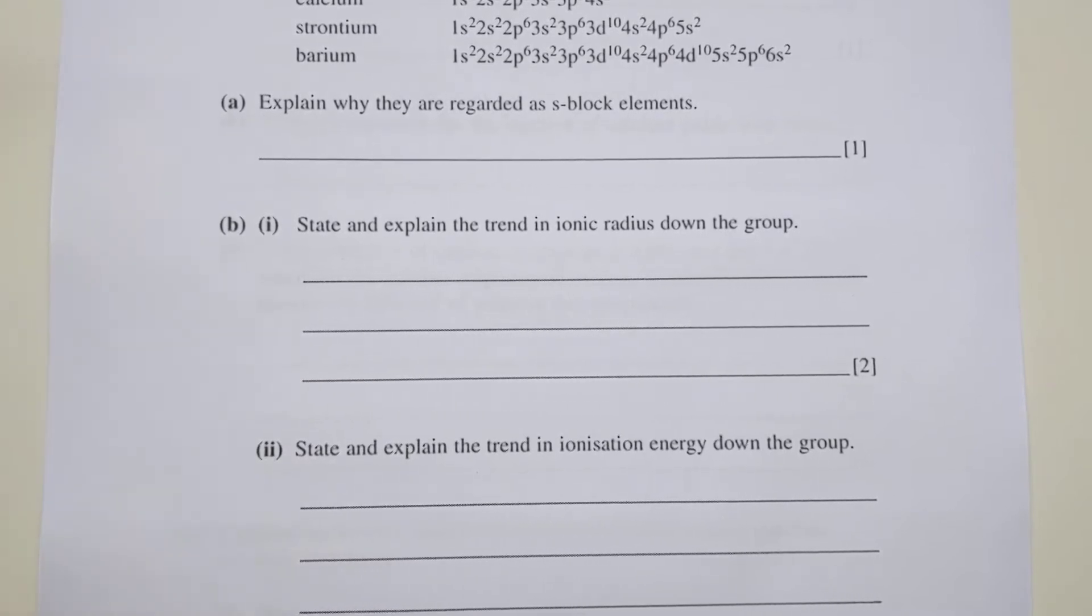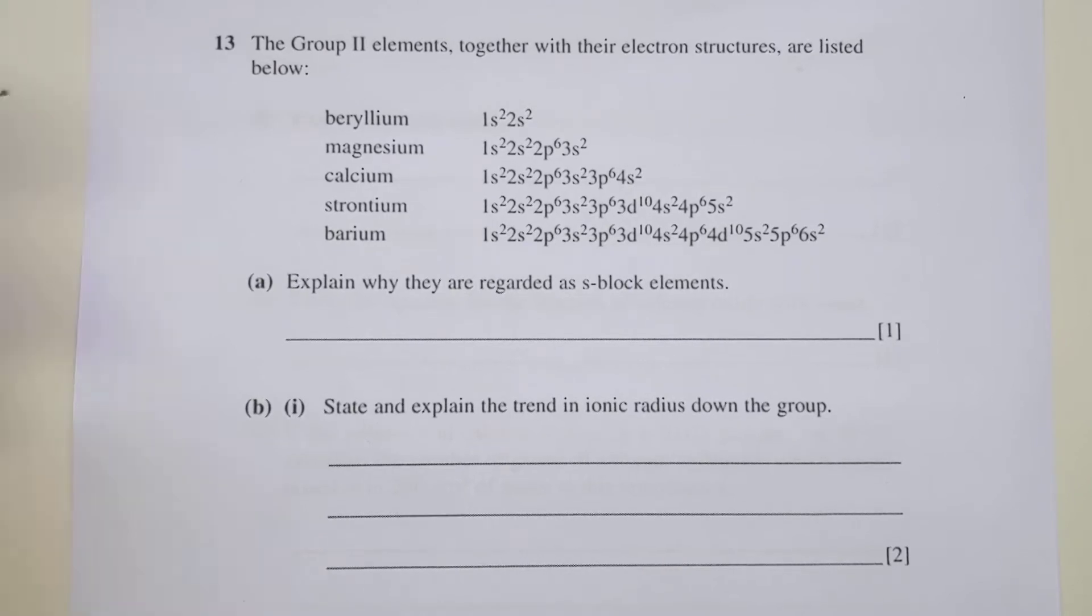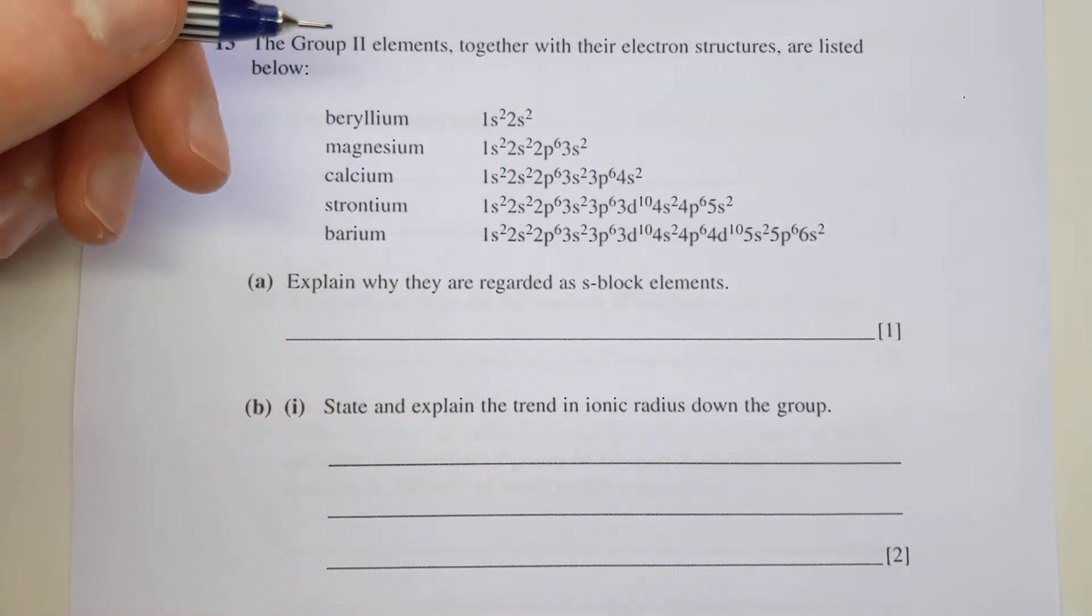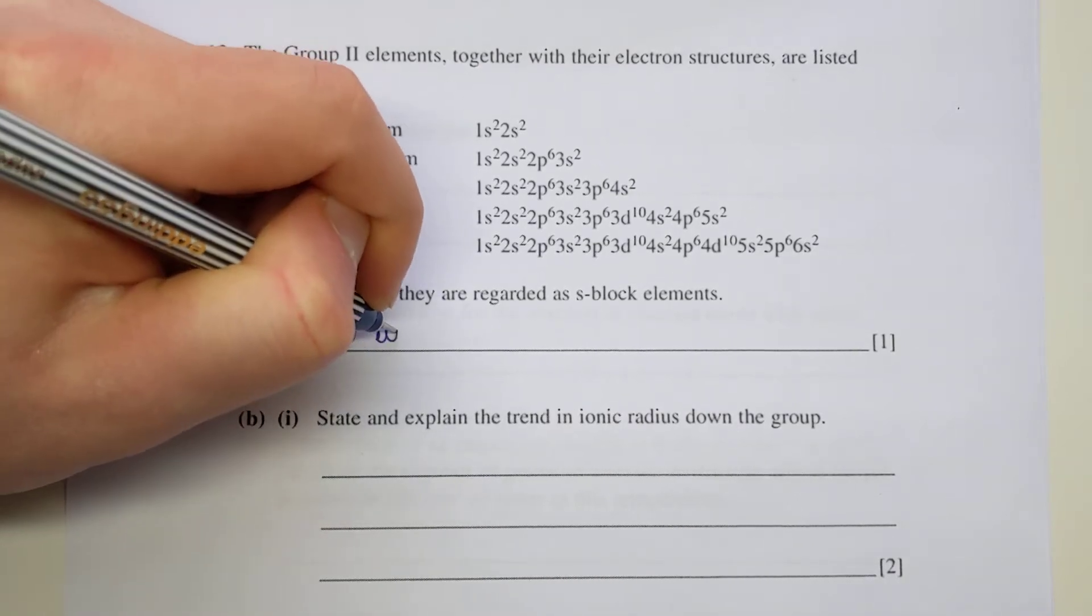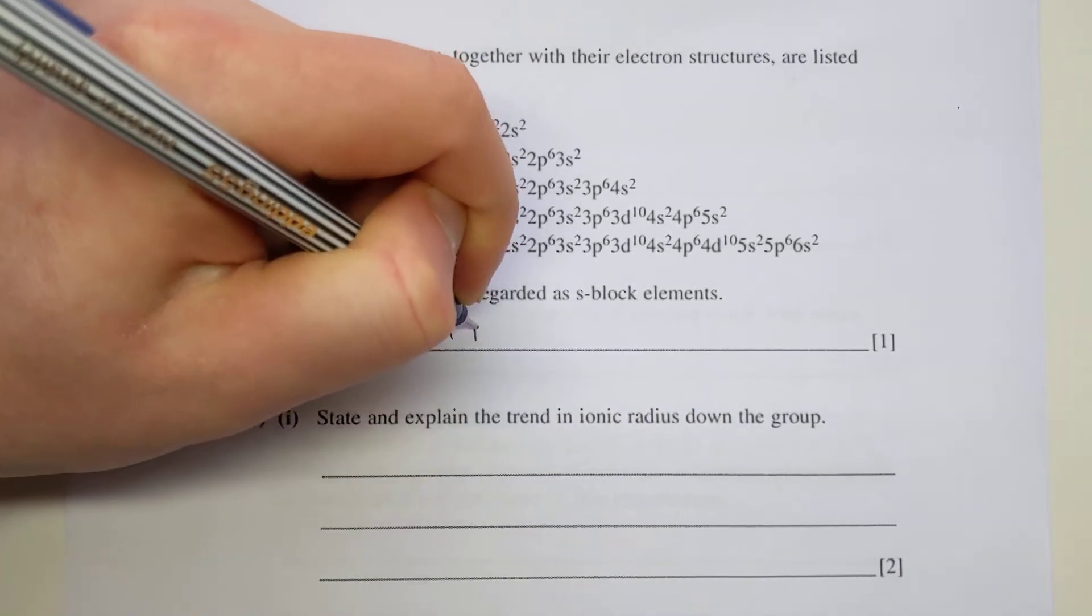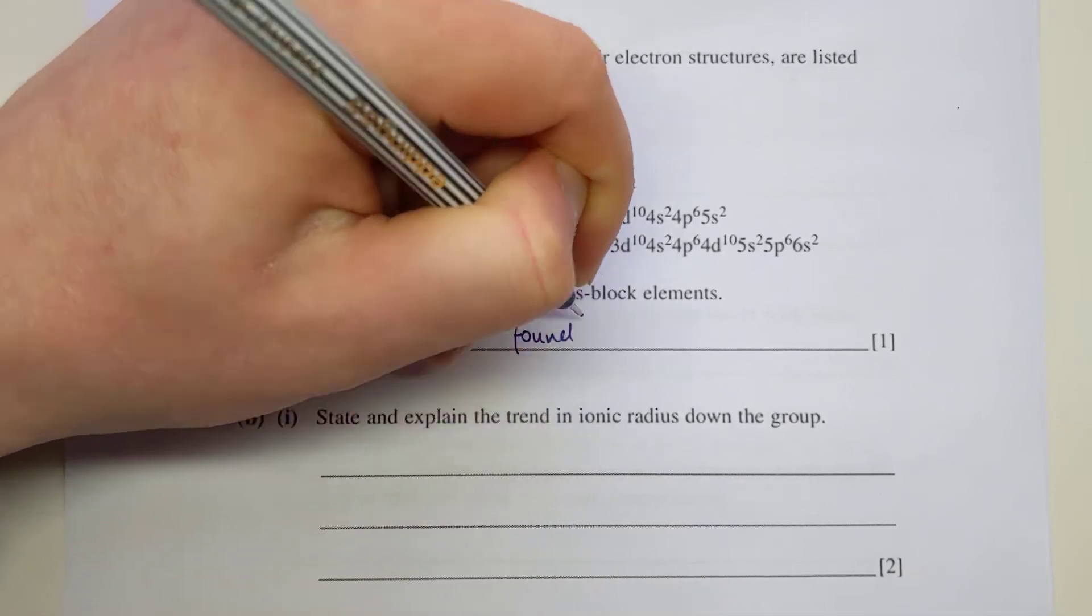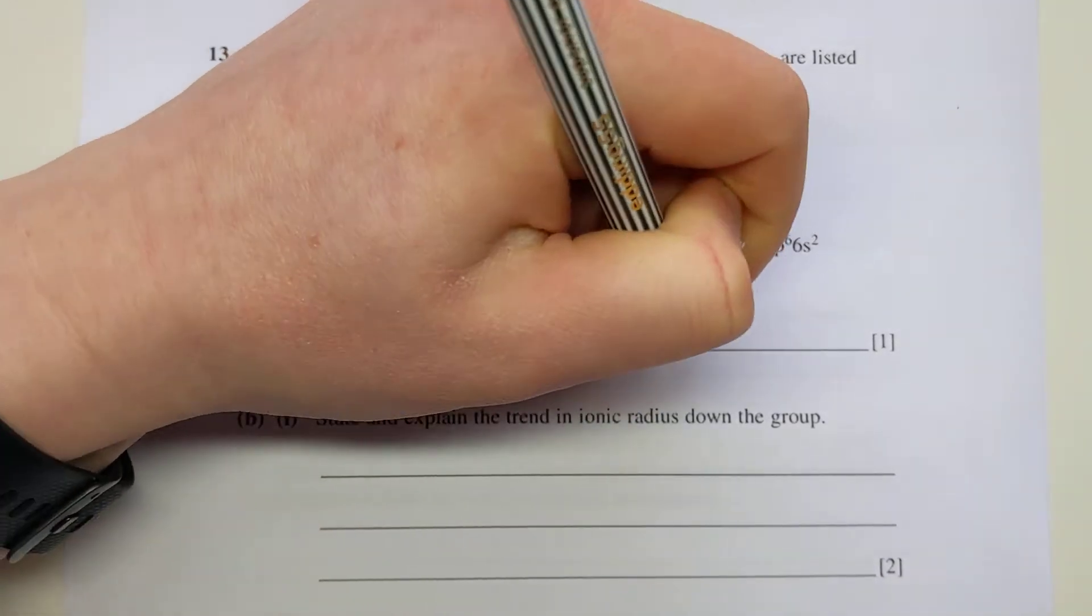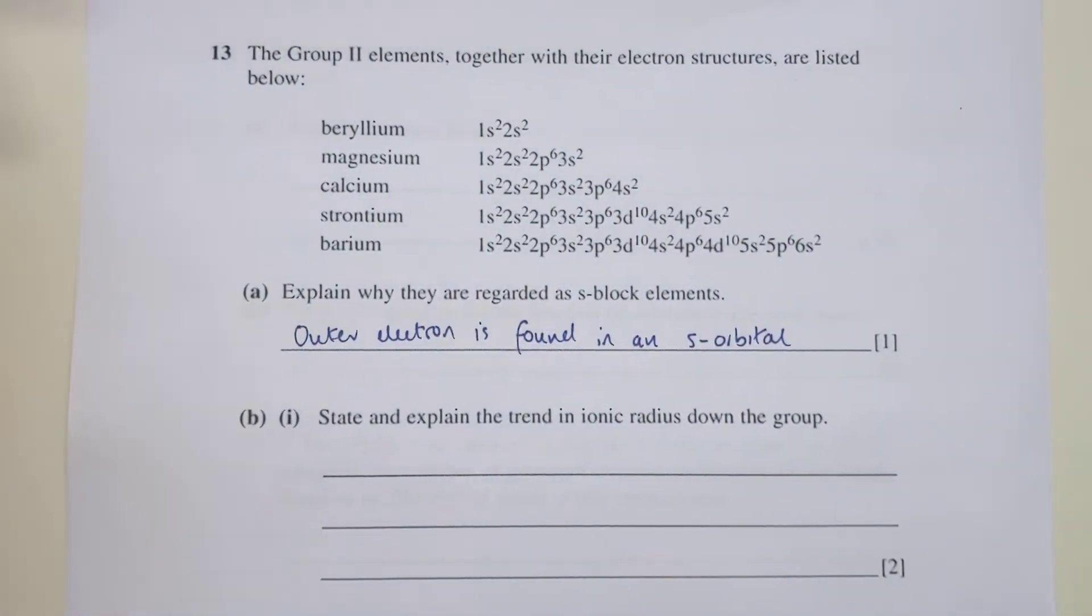First question: explain why they're all regarded as s-block elements. Simple enough - the definition is their outer electron is found in an s orbital. You can say s subshell as well for that one.